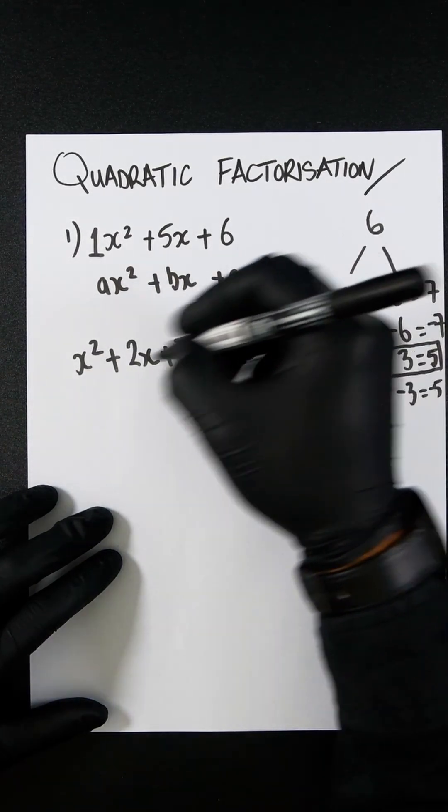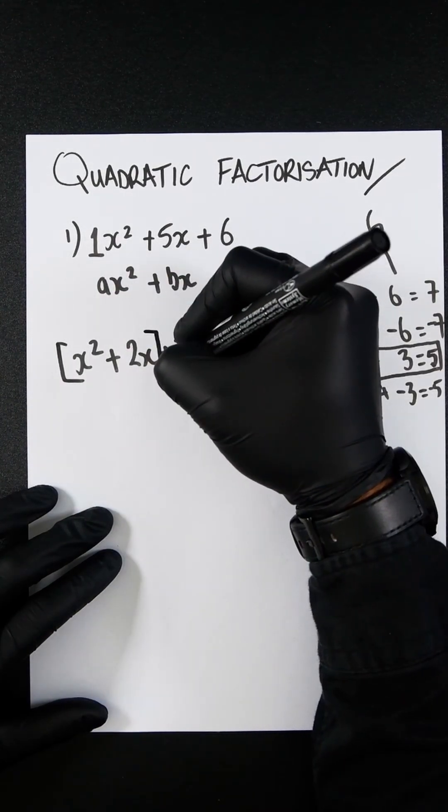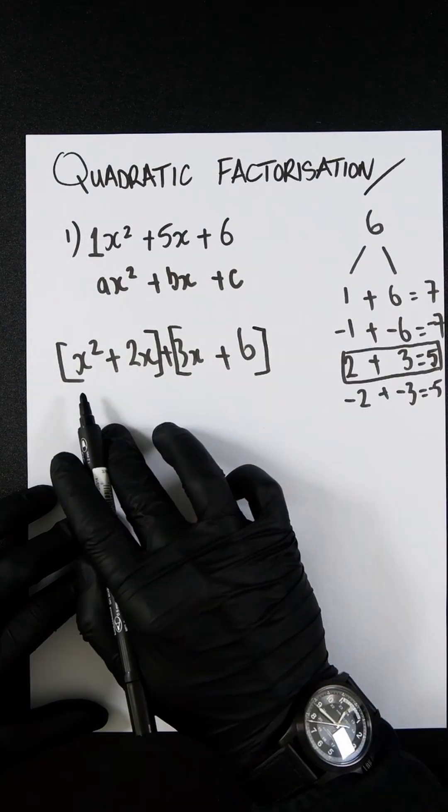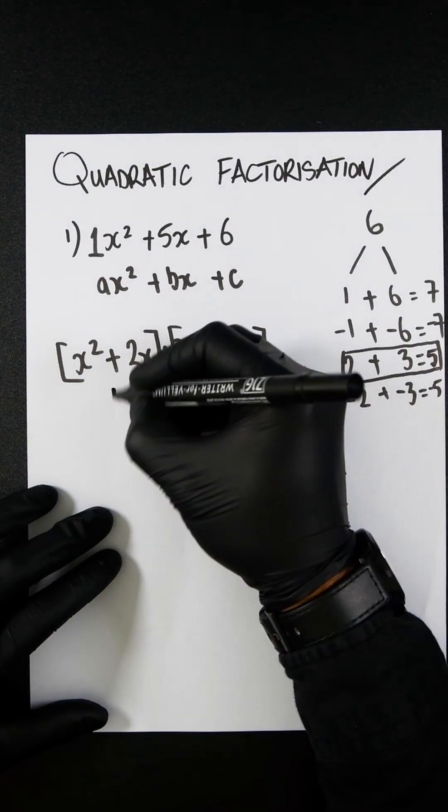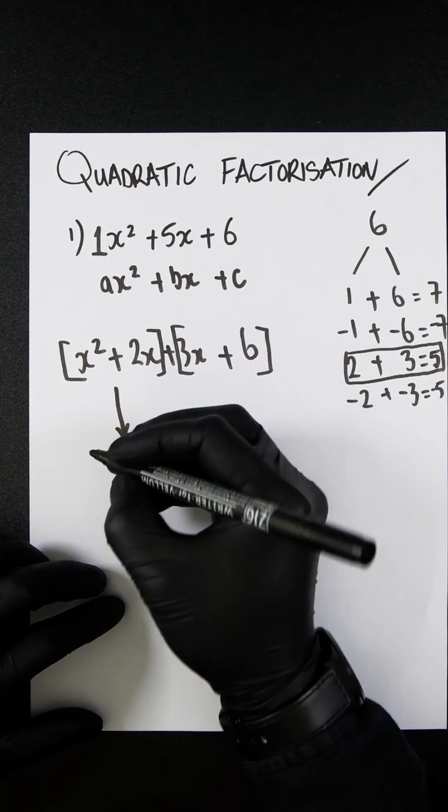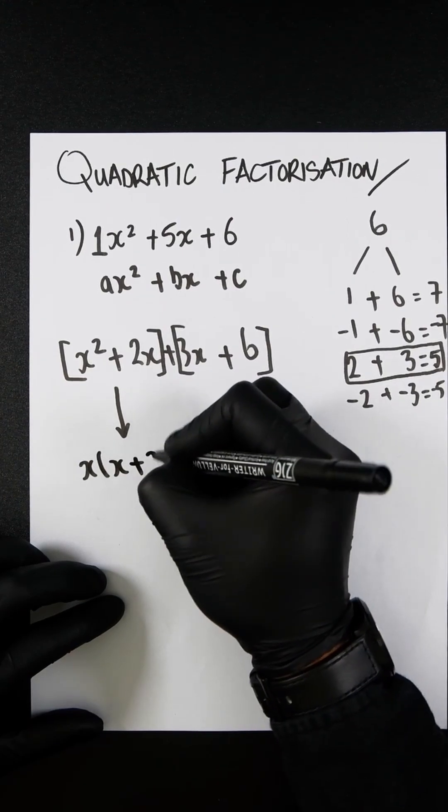You now break this up into two parts. Just looking at this first part, let's factorize it. x is the common term in both parts, so we can pull that out and you'll get x + 2.